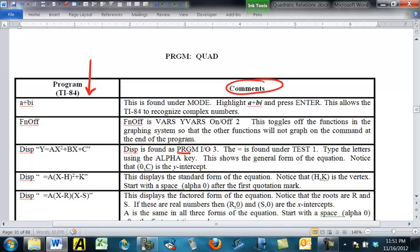For example, to find display, you hit program, choose I-O, input-output number 3. To find equals, press test, and then 1.